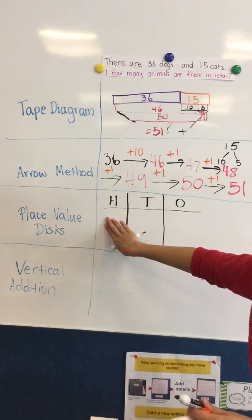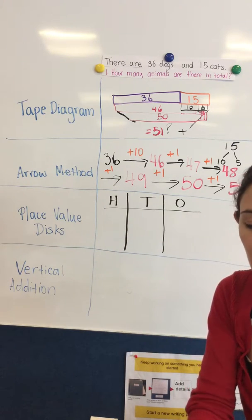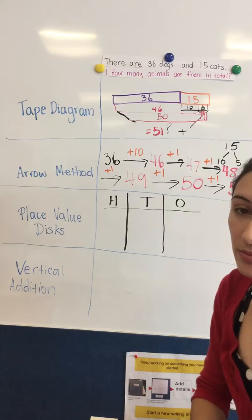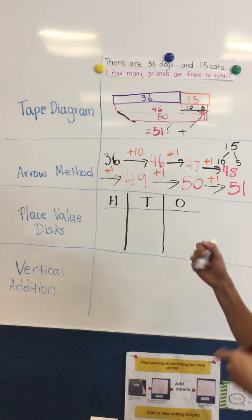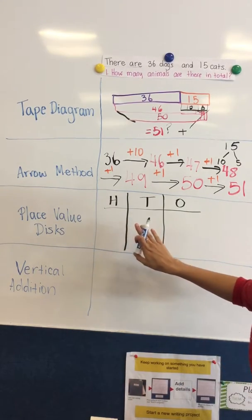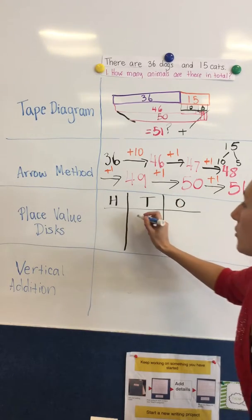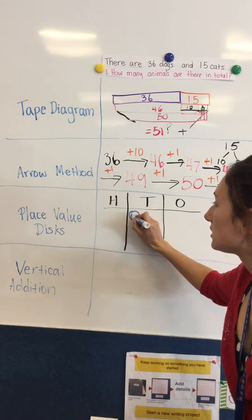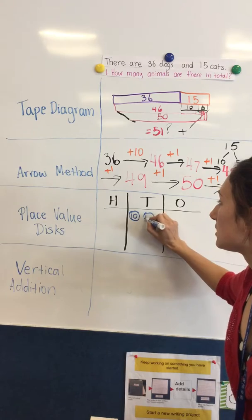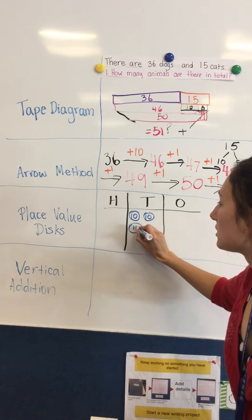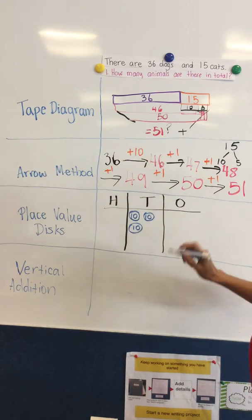For place value disks, it's a good way to remember what the value of each number is. So you would first draw the first number and draw the place value disks for that. So I would draw three tens and six ones to show the 36.